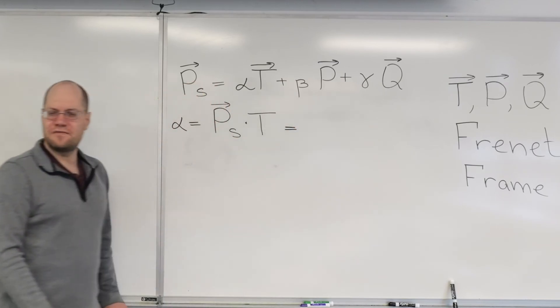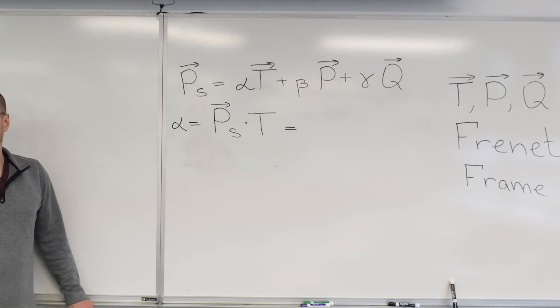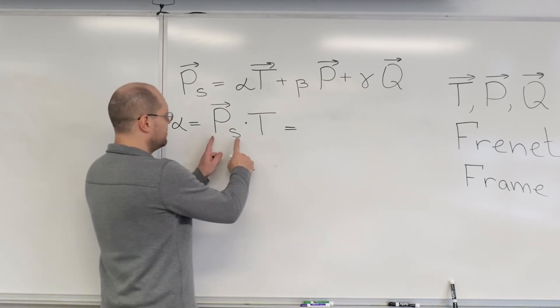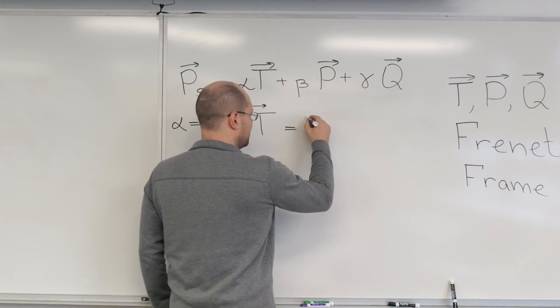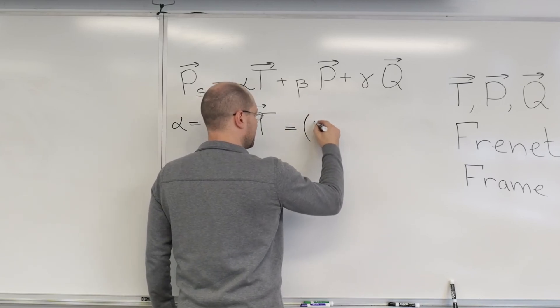is the dot product of the vector that we're decomposing and the tangent vector. And my next step is one of my favorite steps. It's an application of the product rule, but it's an application of the product rule in reverse.